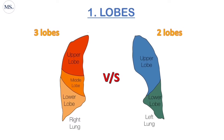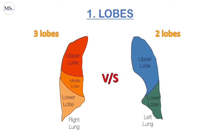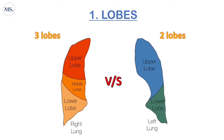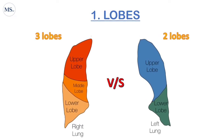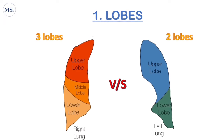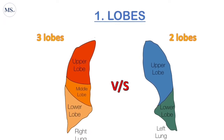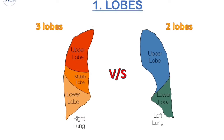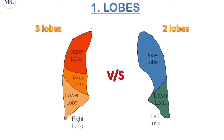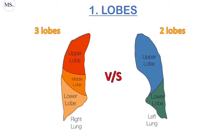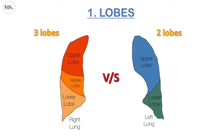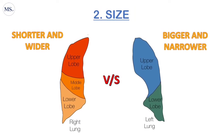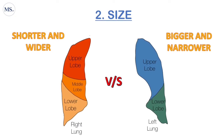The left lung has only one fissure, so it is divided into two lobes: upper lobe and lower lobe. So the difference in comparison of lobes is that the right lung has three lobes and the left lung has two lobes.